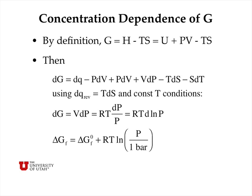By definition, the Gibbs free energy is H minus TS, which we can expand to U plus PV minus TS. We can write a differential form of the Gibbs free energy by expanding the differentials of all these terms. Using the fact that dQ reversible equals TdS — the definition of entropy in differential form — and imposing constant temperature conditions, several terms cancel, and we can write that dG equals V dP. By using the ideal gas law, we can rewrite this as RT dP over P, or RT d(log P).